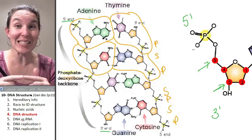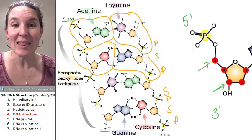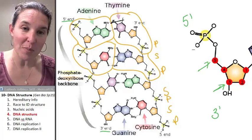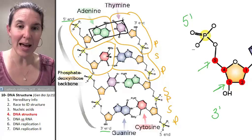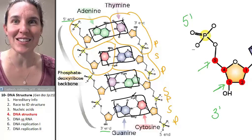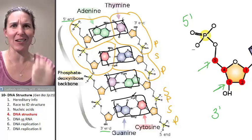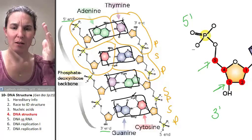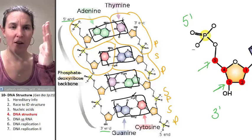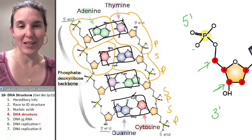The nitrogen bases connect to each other with hydrogen bonds — those are the dotted lines that you can see there. The nitrogen bases form the rungs of the ladder, and the sugar-phosphate backbone forms the side rails of the ladder.